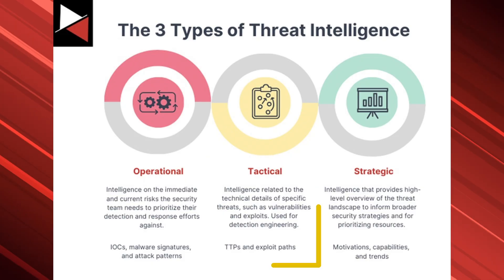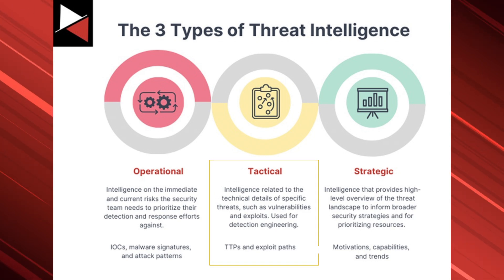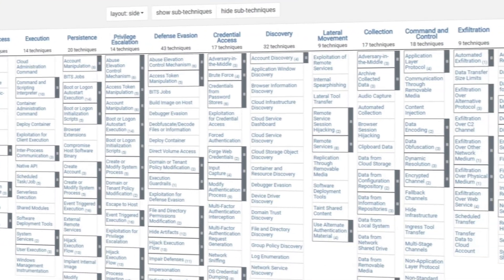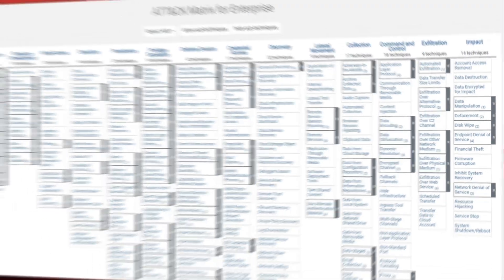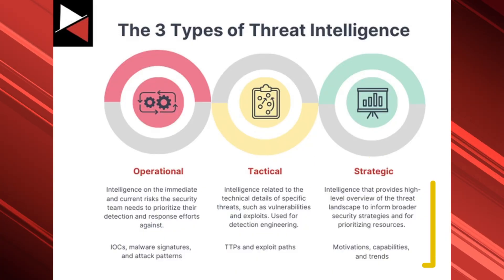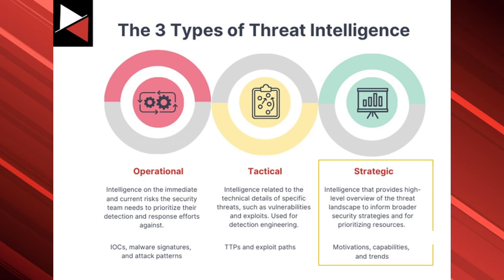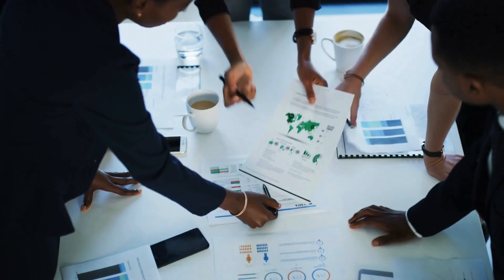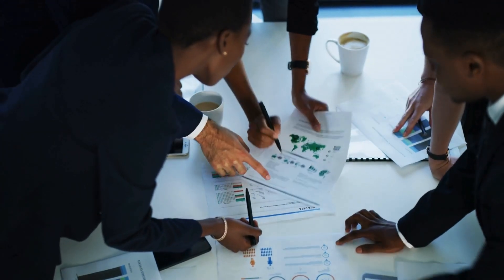Next, tactical intelligence focuses on the technical details about specific threats, such as vulnerabilities and exploits. Defenders use this to identify and mitigate particular threats using detection rules and mitigation policies. This intelligence focuses on targeting threat actors' TTPs — tactics, techniques, and procedures — rather than their individual indicators. Finally, strategic intelligence provides a high-level overview of the threat landscape to inform broader security strategies, like developing policies and procedures, resource allocation, and prioritizing investments. It includes motivations, capabilities, and trends, and is used for long-term planning and decision-making.